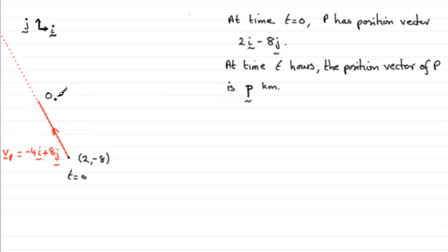relative to a fixed origin O. So you can see that I've gone 2 units to the right and 8 units down, just roughly. And this is where the boat p is at time t equals 0.